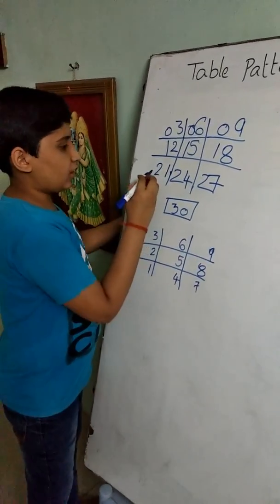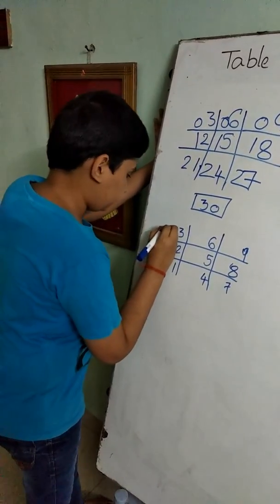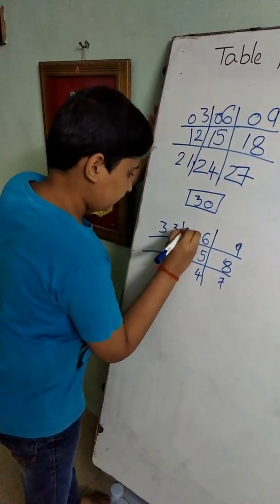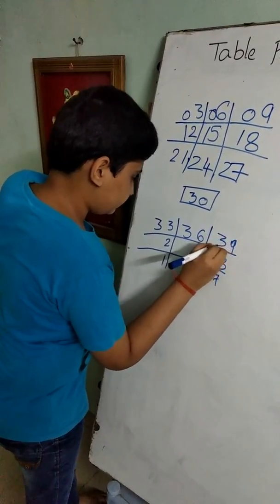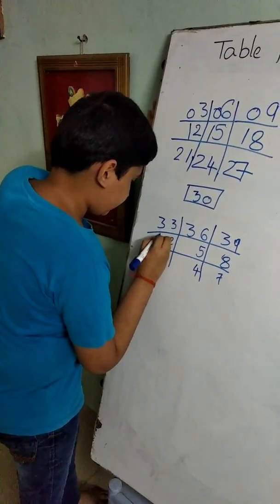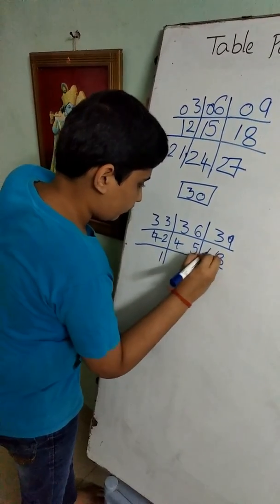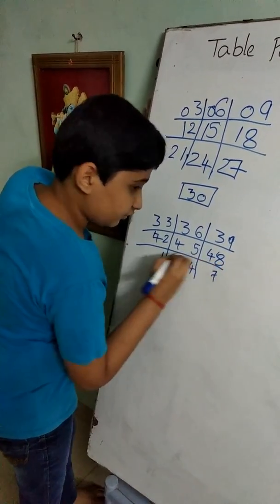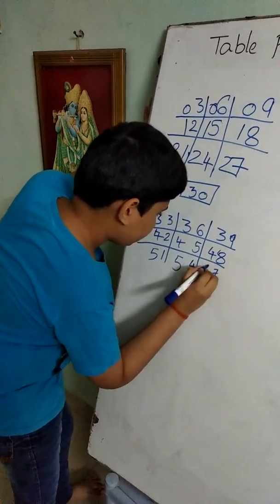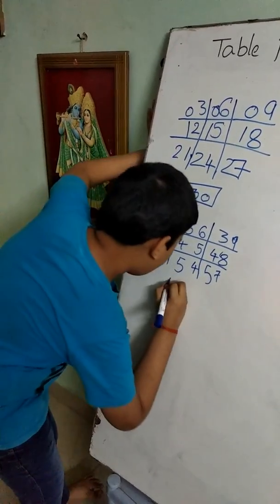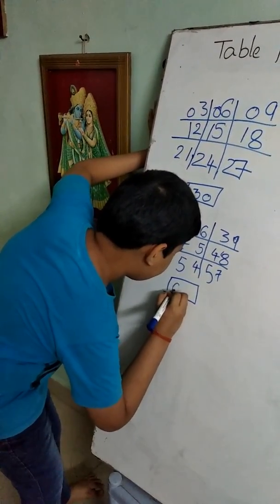Here we should write 3, 3, 3, 3. Here we should write 4, 4, 4. And here we should write 5, 5, 5. And we all know that 6 tens are 60, so we should write 60 here.